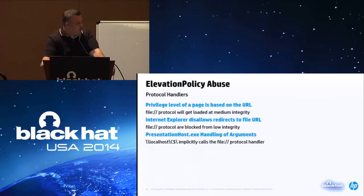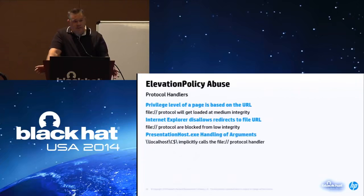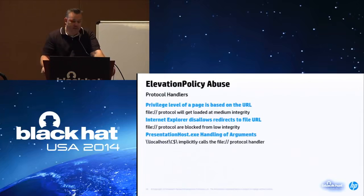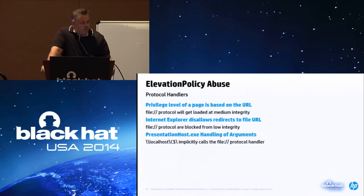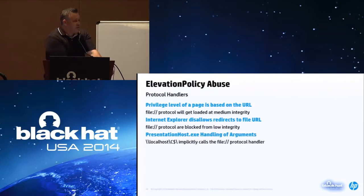If you look at the registry for PresentationHost, it's an excellent attack target because it is running with a policy value of 3, meaning it runs at medium integrity without any user intervention. PresentationHost provides one argument to it, so if you can find a vulnerability in how PresentationHost works you could get medium-level code execution through that vector. The researchers were abusing the way PresentationHost uses protocol handlers. In Internet Explorer, the privilege level of the page is based off the URI — if you're using a file protocol handler, the page loads at medium integrity. But from a low-level process, you can't just redirect to a local file; it blocks that. PresentationHost actually will implicitly call the file protocol handler if you use localhost C$ as the location, allowing you to put any location on disk into PresentationHost.